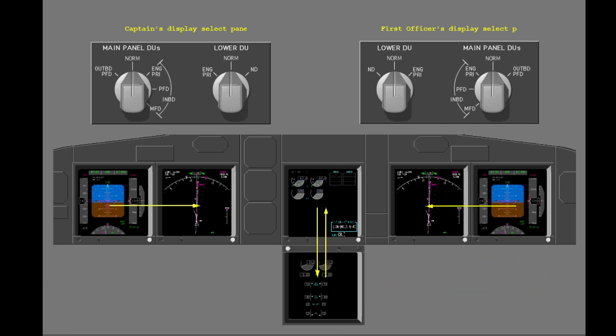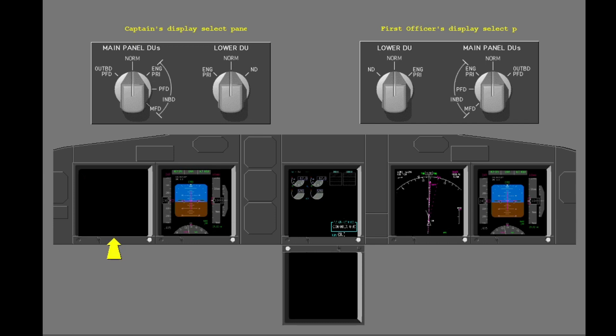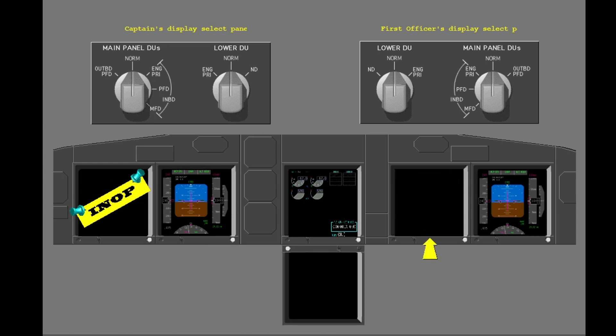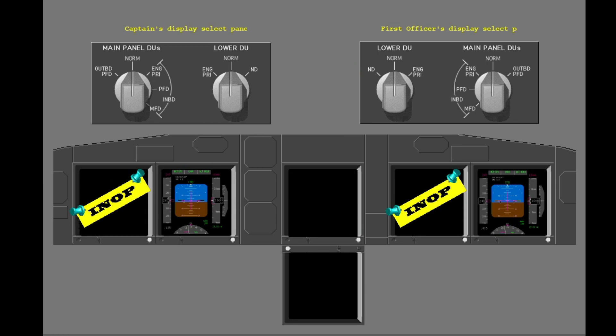If a DU fails, automatic display switching makes sure the necessary data are always available to the pilots. If an outboard DU fails, the DU blanks and the PFD automatically shows on the inboard DU. If an inboard DU fails, the DU blanks; the navigation display or ND does not automatically move to the lower display. If the upper DU fails, the DU blanks and the primary engine display moves to the lower DU. If the secondary engine instruments are being displayed, a compact engine display will be shown.